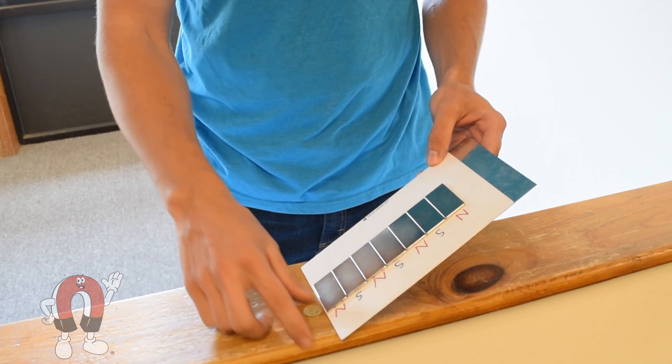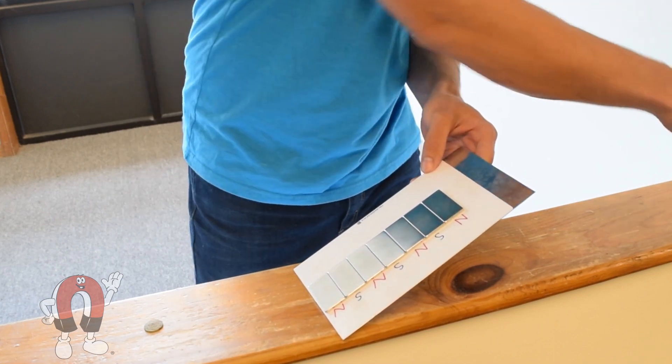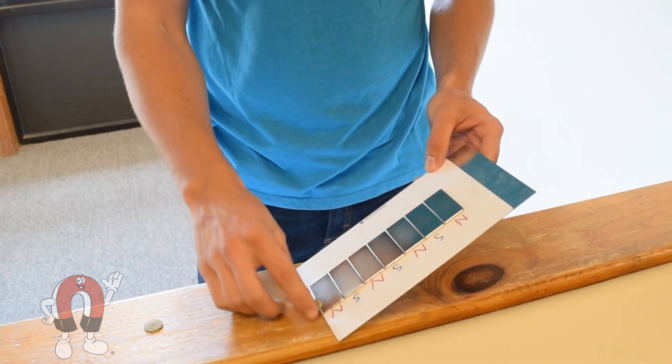This can also be used to help distinguish between different metals. Here is a copper Indian head penny we found. The copper does a similar thing, although it's not quite as noticeable as the silver.